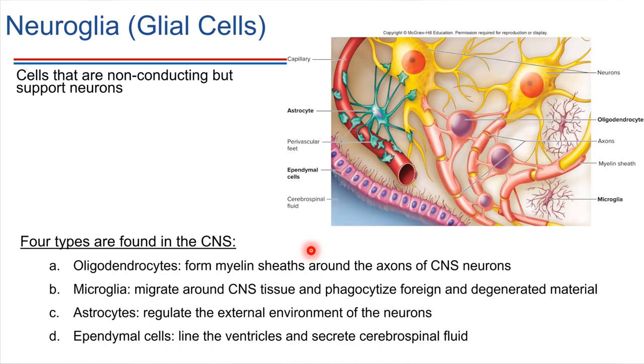Let's start with the central nervous system. Remember, brain and spinal cord — that's what makes up the central nervous system. In the central nervous system, there are four main types of neuroglia.